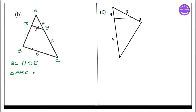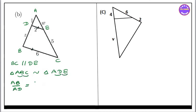So the triangle is a triangle. We are going to show you triangle ABC is similar to triangle ADE. We are going to show AB by AD equal to BC by DE, and BC by DE equal to AC by AE, and AC by AE.